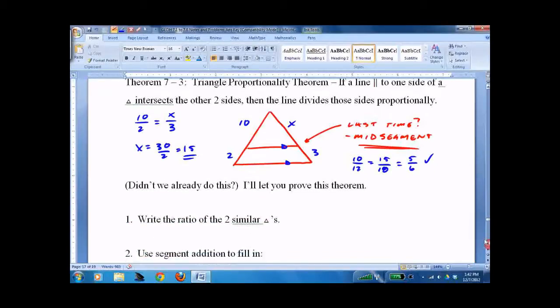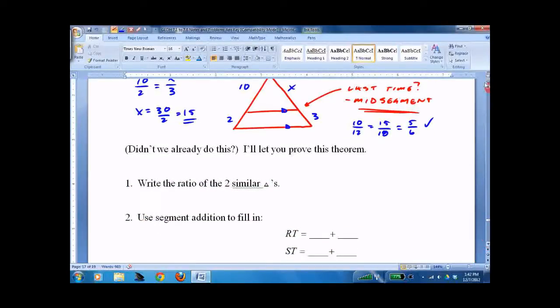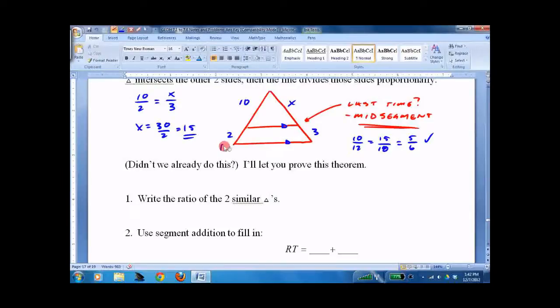There's a proof to the theorem. Write the ratio of the two similar triangles. This is something you could try if you want. If you want to pause the recording. I will do it right now. Oh, we actually labeled this differently. Now I'm going to leave my labels the same.